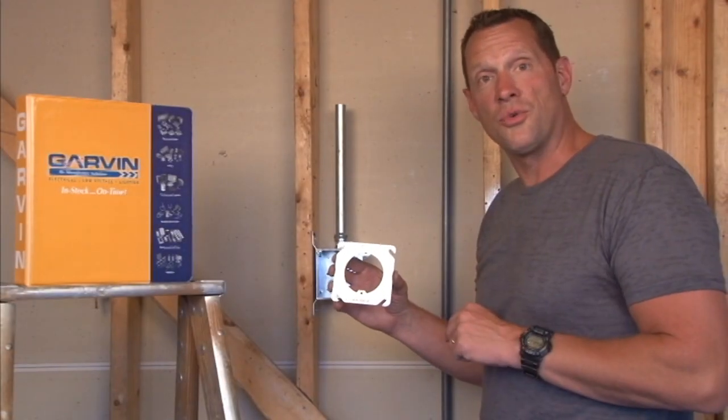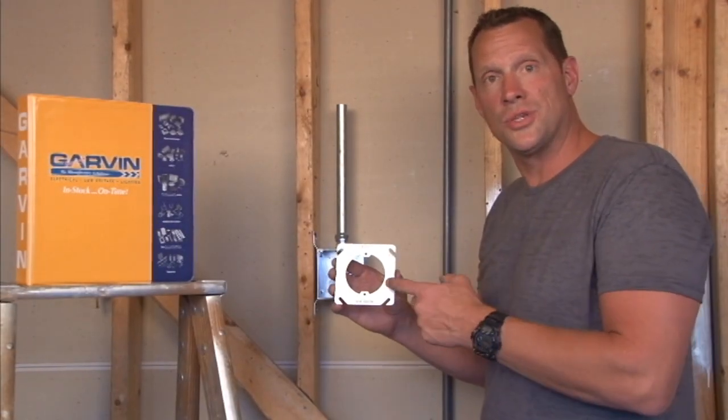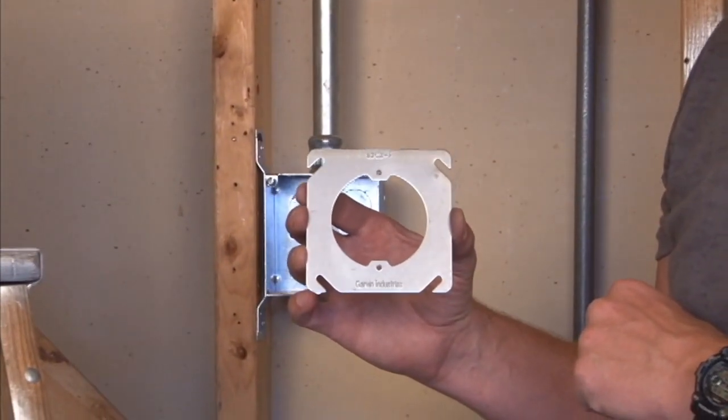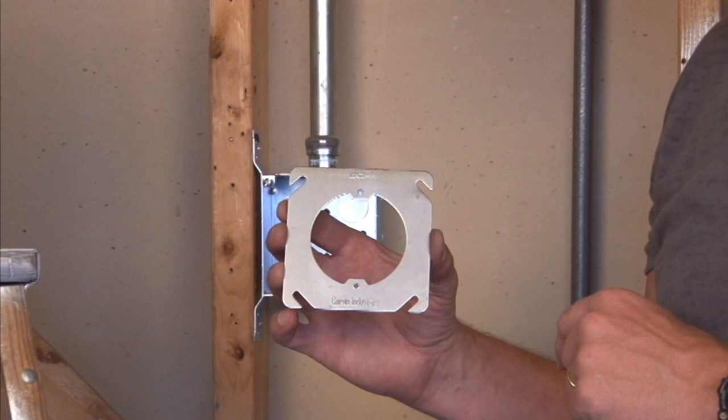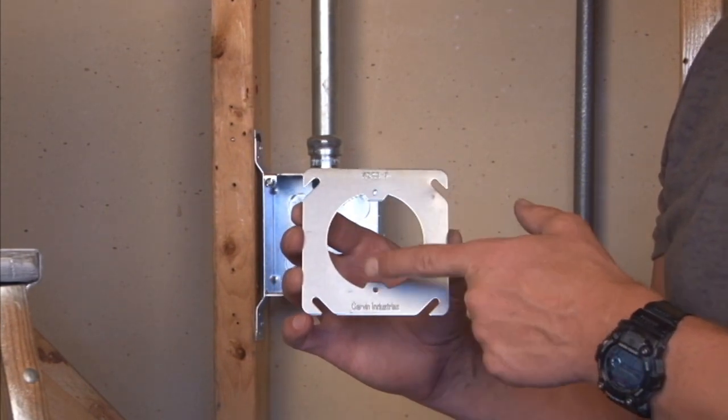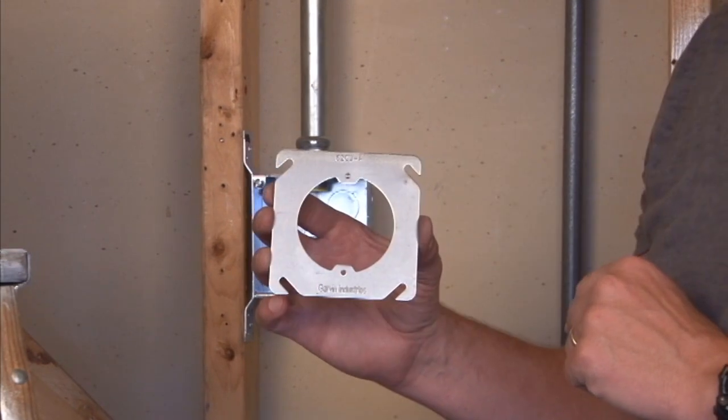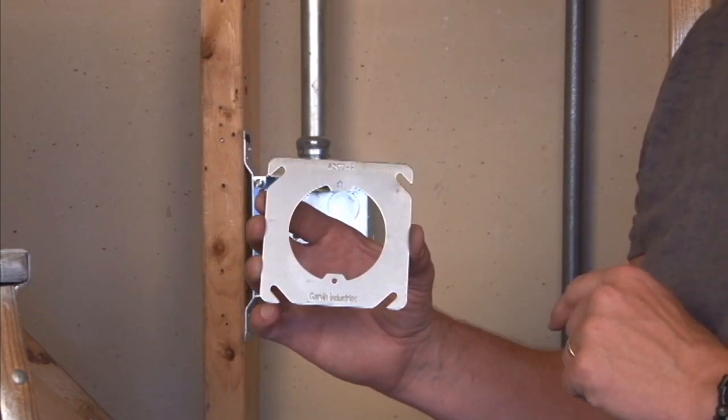Part number 52C3F is a square to round plaster ring with tapped 832 holes. These are commonly used on 4-inch square boxes. It provides a round opening for sconce lights or overhead lights that are attached to 4-inch square boxes.